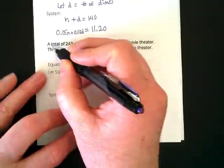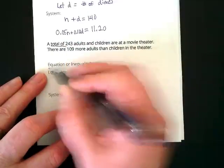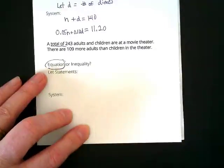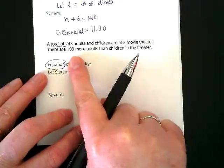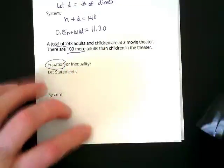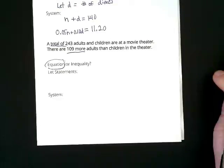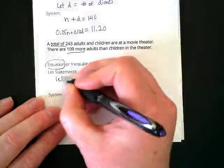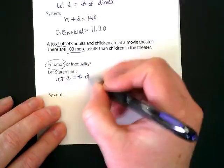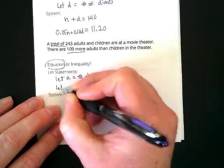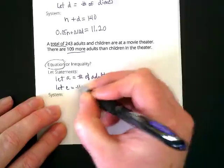Okay? So, let's underline. A total of tells us that this is an equation. The total of tells us we're going to have something that equals because that's the total. We also know that there's 109 more adults than children. What do you guys think the two variables should be? A and C. Children and adults. So, we're going to let A equal the number of adults. We're going to let C equal the number of children.